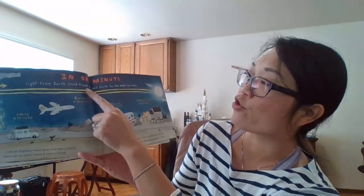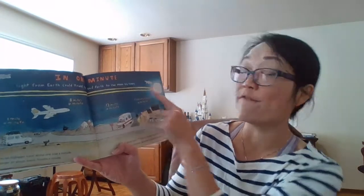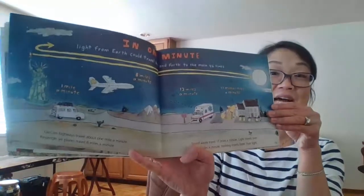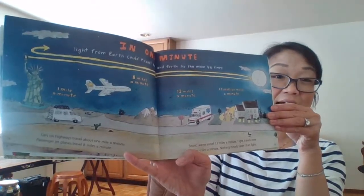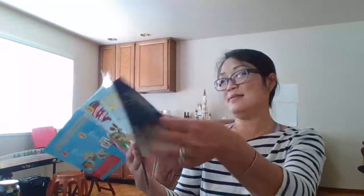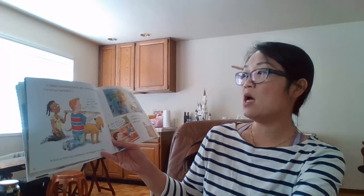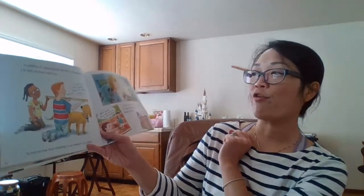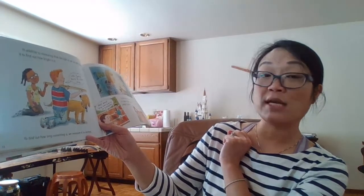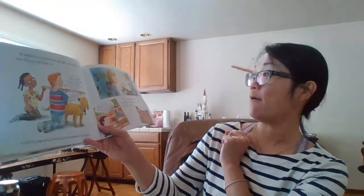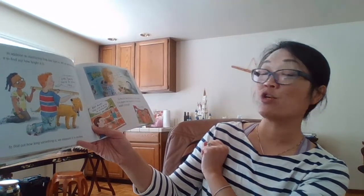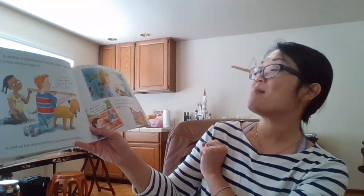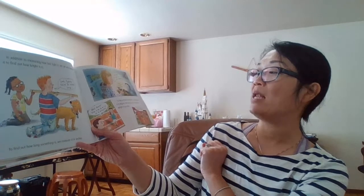So in one minute, light from Earth could travel back and forth to the moon 46 times. That's a fun fact. In addition to measuring how fast light is, we can also measure it to find out how bright it is. You are 32 inches long. To find out how long something is, we measure it in inches. To find out how hot something is, we measure it in degrees. We measure time in minutes and weight in pounds.